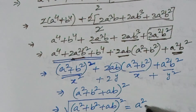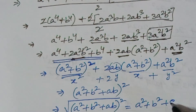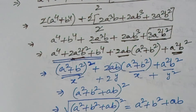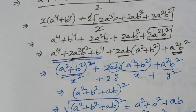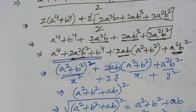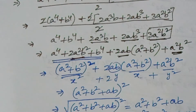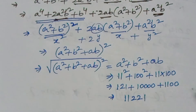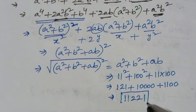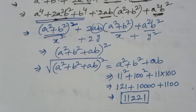So the square root gives us a² + b² + ab. Substituting a = 11 and b = 100: 11² = 121, 100² = 10000, and 11 × 100 = 1100. So the required answer is 121 + 10000 + 1100 = 11221. This is the required answer for this question.